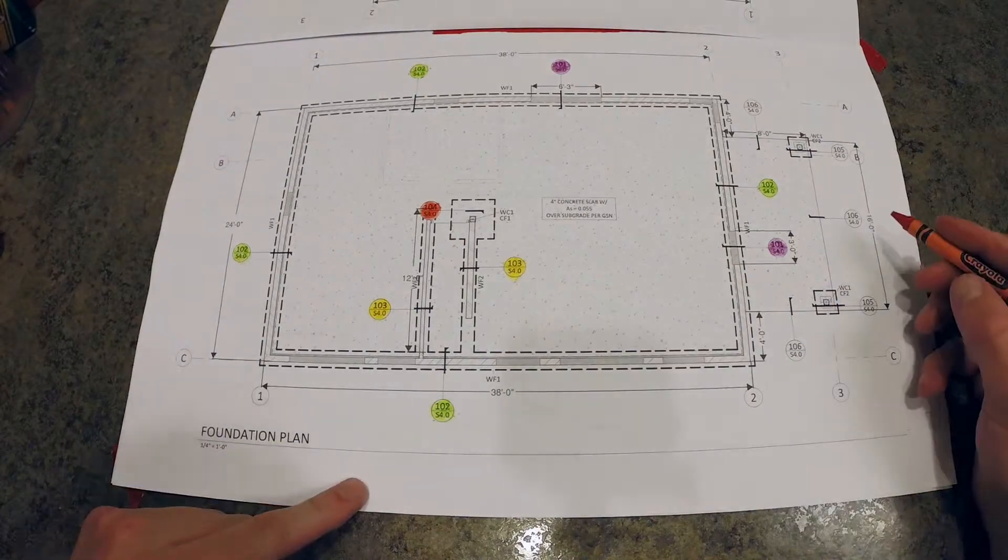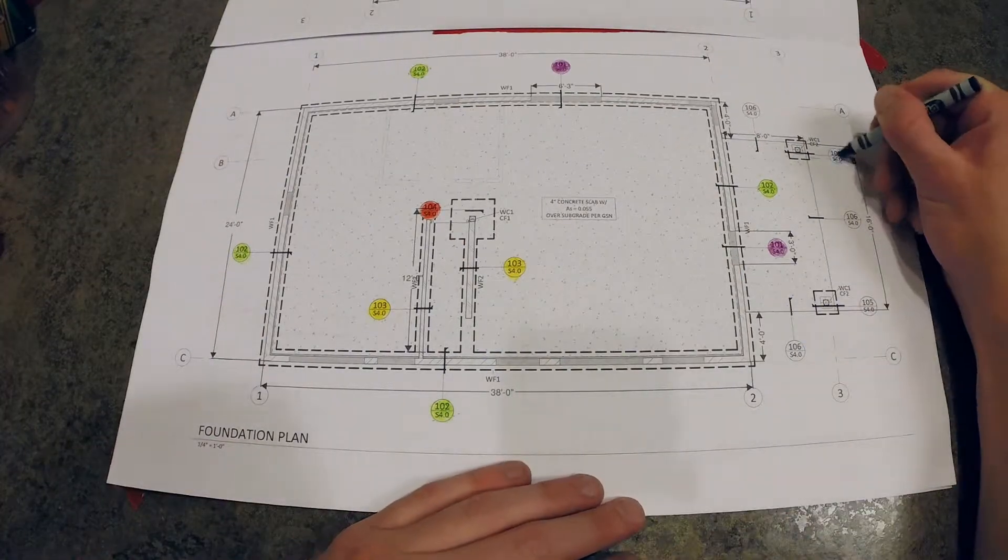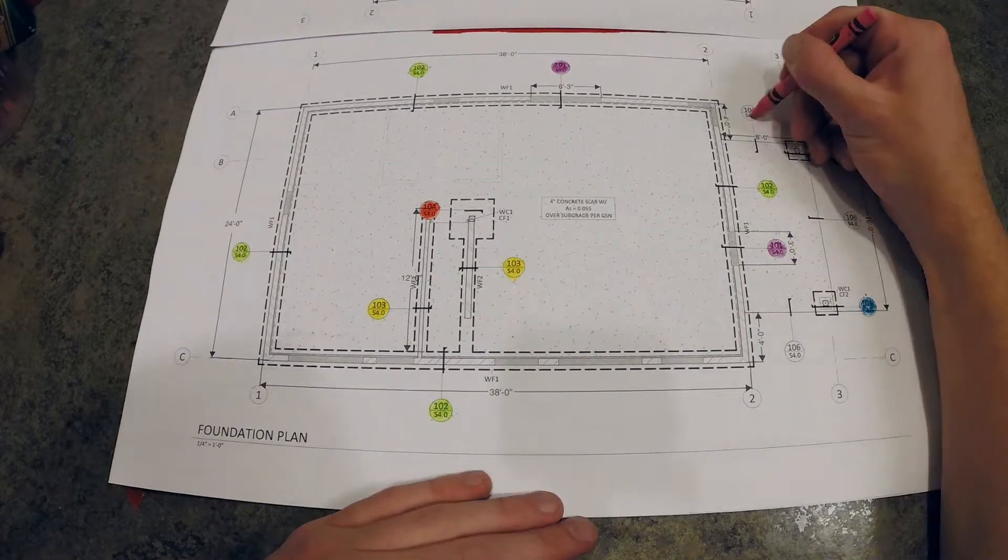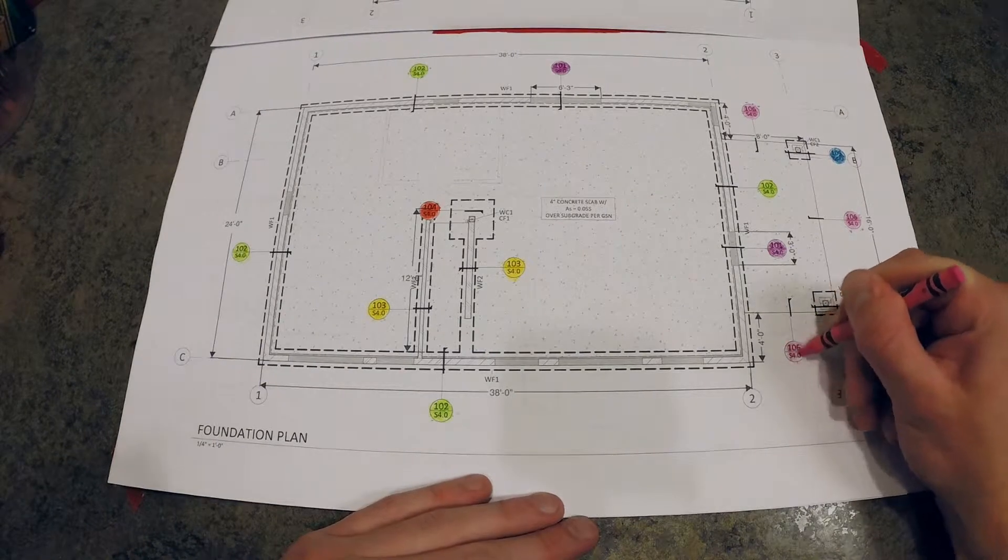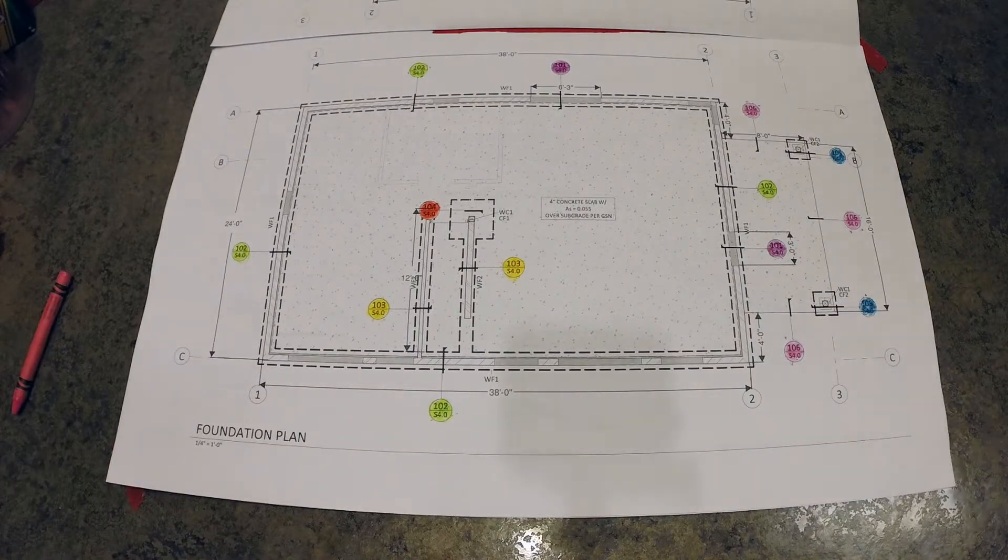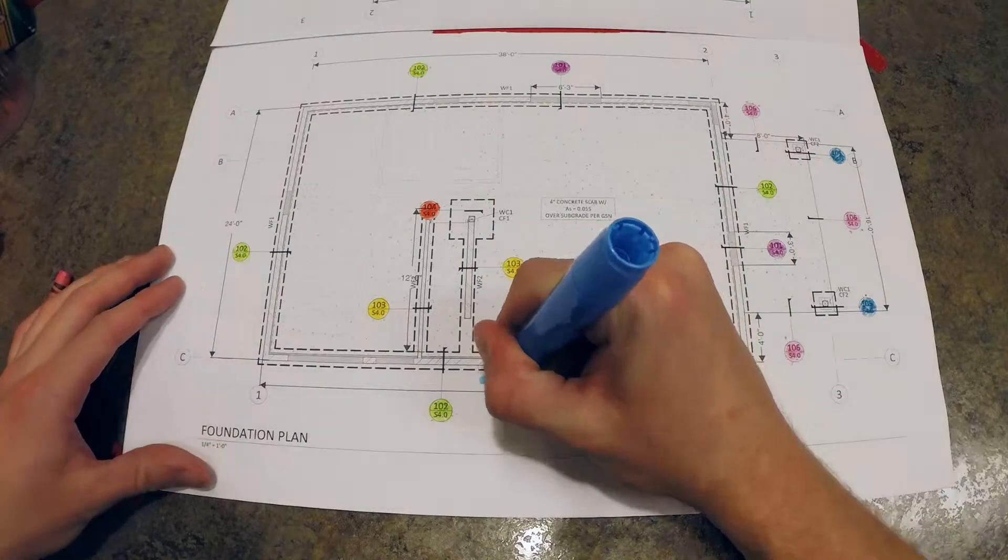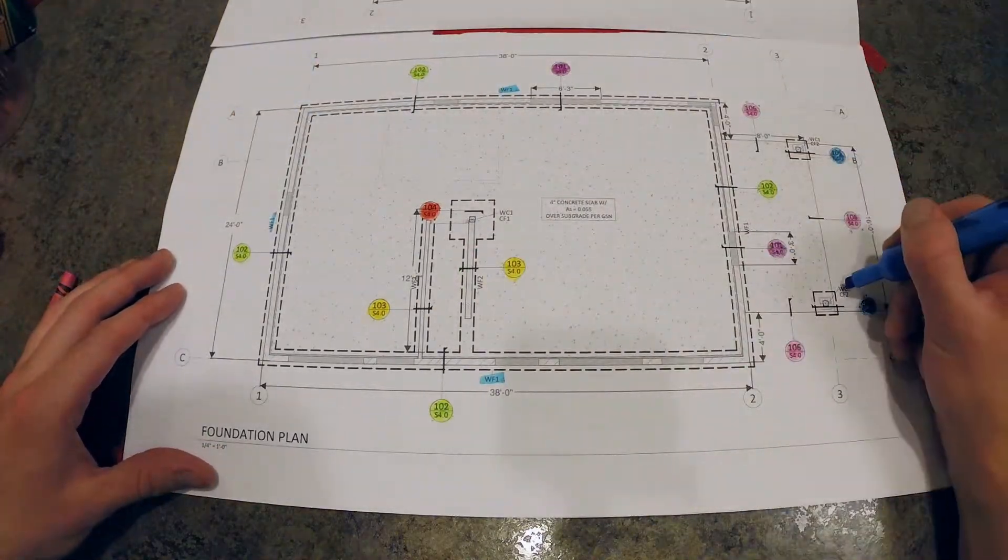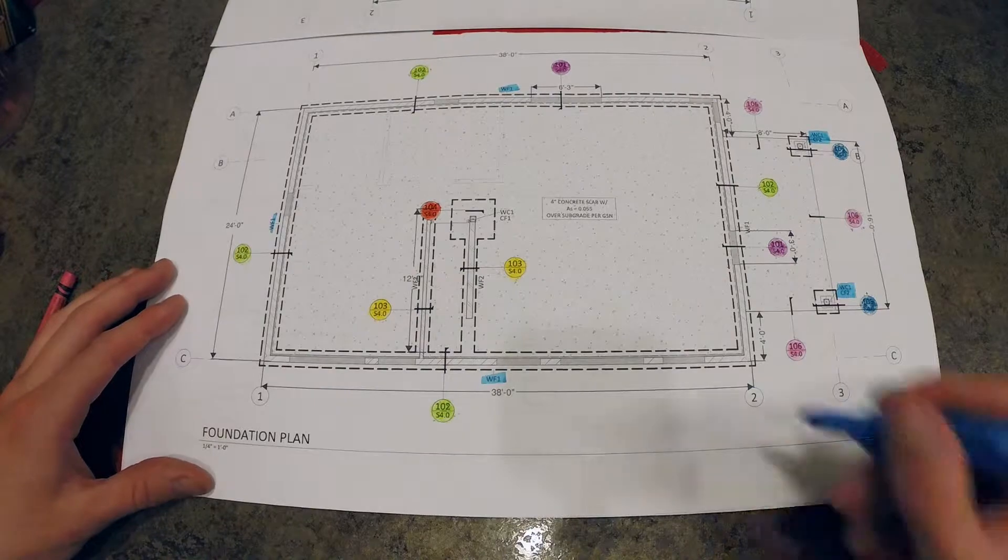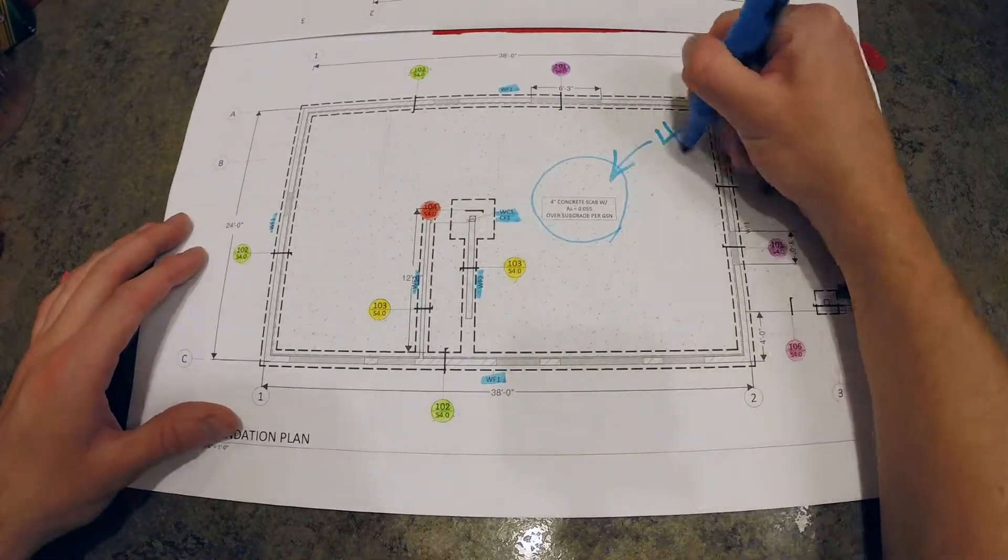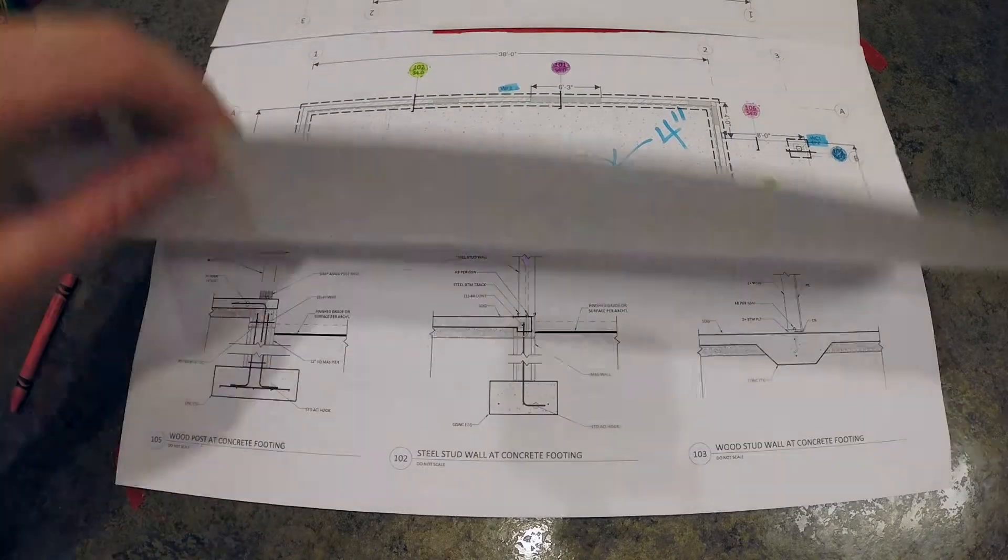There's also some additional call-outs we're going to highlight that give additional details, dimension-wise, to the details that these call-outs represent. This one is WF1, WF2, CF1, CF2. Also the overall slab is going to be 4 inches thick.